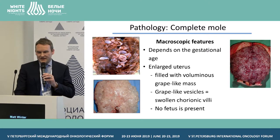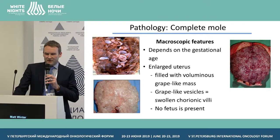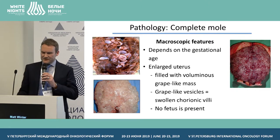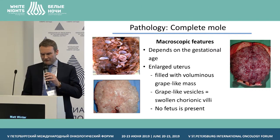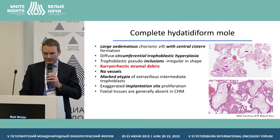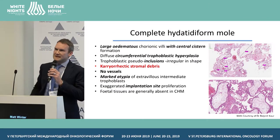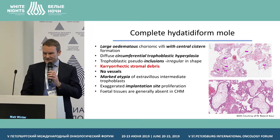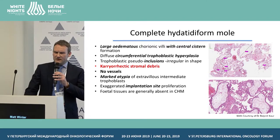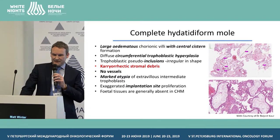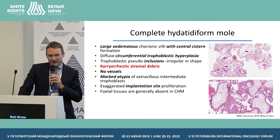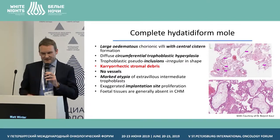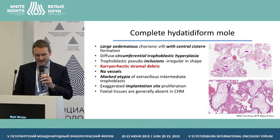In terms of pathology, a complete mole may look like this. The macroscopic features depend on gestational age — you may see an enlarged uterus with a grape-like mass and grape-like vesicles of the swollen chorionic villi, with no fetus present. Histologically, the classical features include large edematous chorionic villi with central cistern formation, diffuse circumferential trophoblastic hyperplasia, and karyorrhectic stromal debris. There aren't any vessels in a complete mole by this stage, but there are marked atypia of extra-villus intermediate trophoblasts and an exaggerated implantation site proliferation.